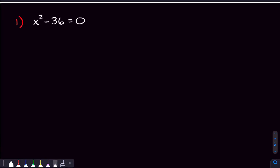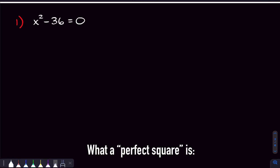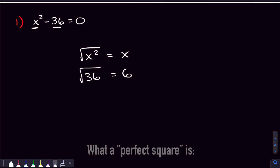We're going to start with x squared minus 36 equals zero. The first thing I see is that this is a binomial — it has two terms. Whenever I see a binomial, the first question I ask is: is it a difference of perfect squares? Here it actually is, because we have the subtraction and two perfect squares. A perfect square is anything we can take the square root of and get something nice. The square root of x squared is just x, and the square root of 36 is six.